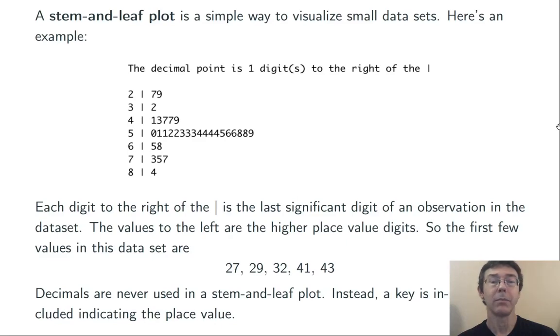Notice the key at the top. The decimal point is one digit to the right of the slash. Decimals are never used in stem and leaf plots. Instead, we get that key to tell us the place value. So here, one digit to the right of the slash tells us that we have 27 rather than 2.7 or 0.27.